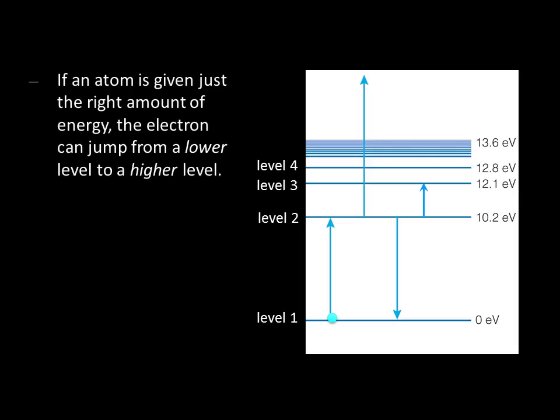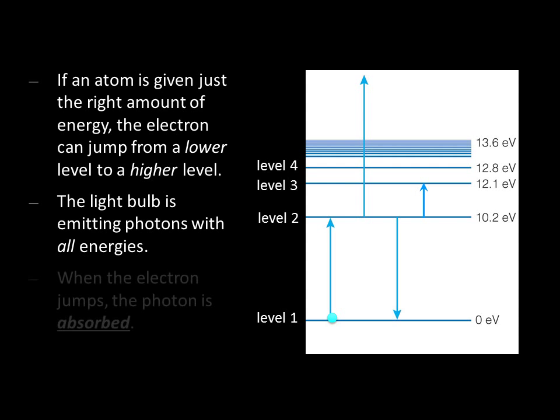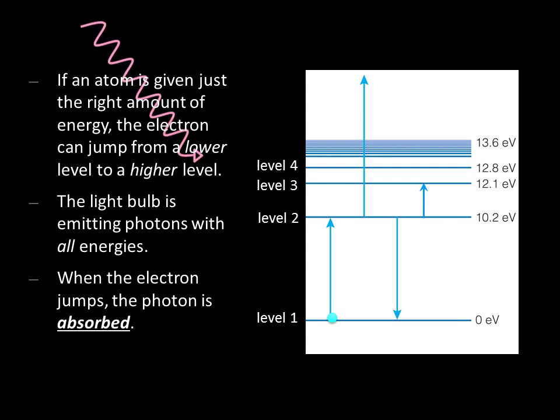If an atom is given just the right amount of energy, an electron can jump from a lower energy level to a higher energy level. Since the light bulb is emitting photons with all wavelengths of light, or equivalently all energies, some of those photons are going to be just right to get the electron in our atom to jump from one level to another. Here, the photon hits the atom, the electron jumps, and the photon is absorbed.